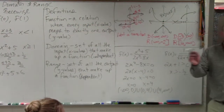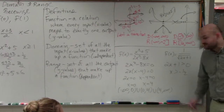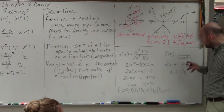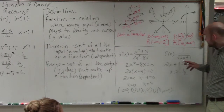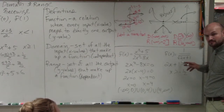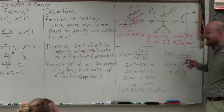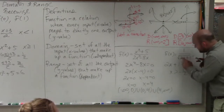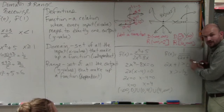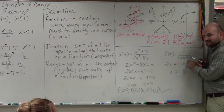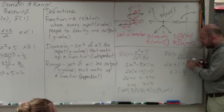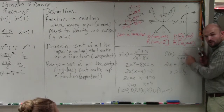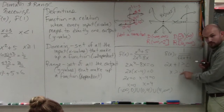Let's plug in some numbers. Let's plug in negative 1 half. 2 times negative 1 half is negative 1. Negative 1 plus 1 is 0. What's the square root of 0? Zero. Can you divide 1 divided by 0? No. So this works — that's not part of the domain.